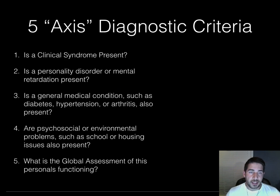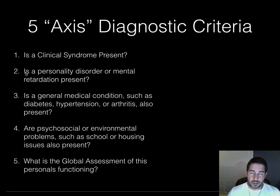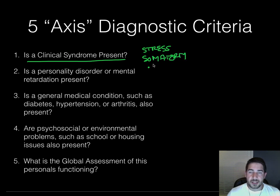The DSM uses five axes. When diagnosing a disorder, clinicians go through this checklist. The first axis asks: is a clinical syndrome present — such as a stress-related or somatoform disorder? The second axis asks: is a personality disorder or mental retardation present? Sometimes the answer is yes, sometimes no.